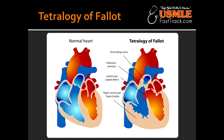Describe how squatting helps in Tetralogy of Fallot. Older patients with Tetralogy often learn to squat to reduce cyanotic symptoms. Squatting reduces blood flow to the legs, which increases peripheral vascular resistance (PVR), and thus decreases the cyanotic right-to-left shunt across the VSD.